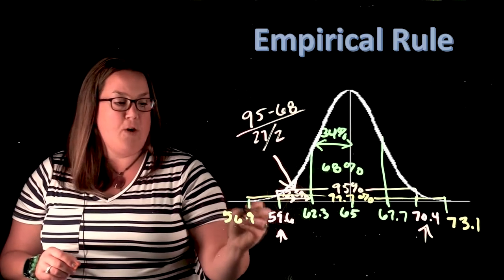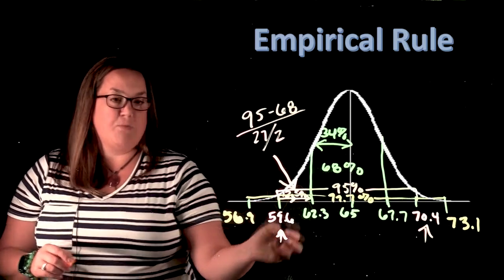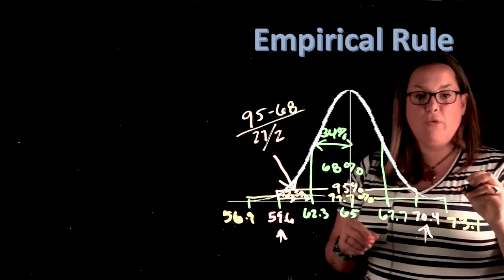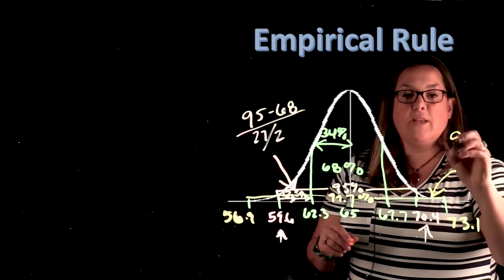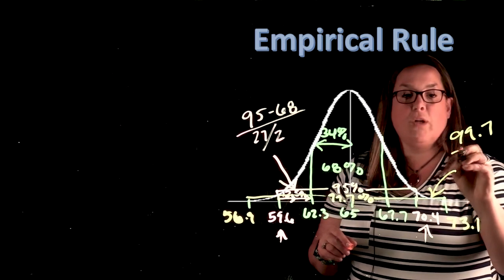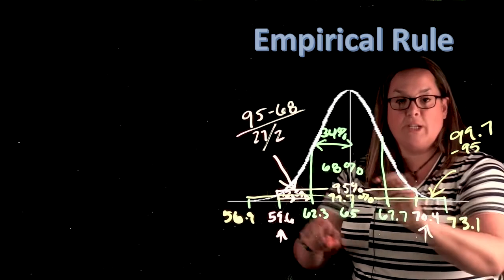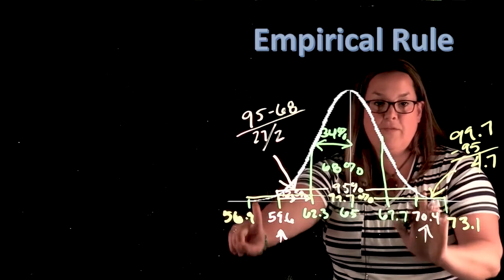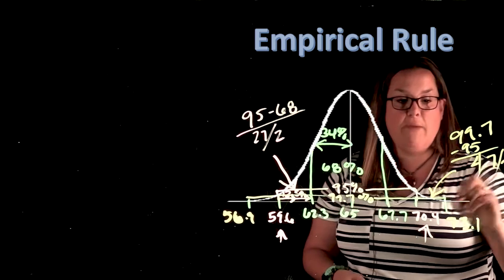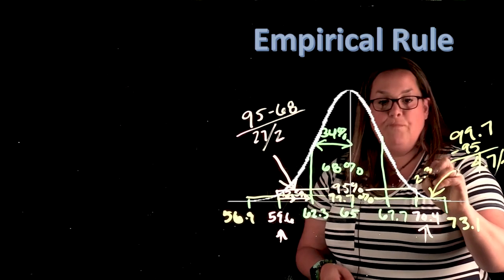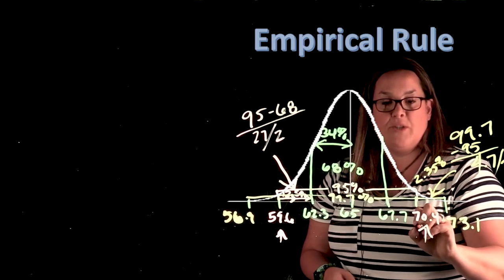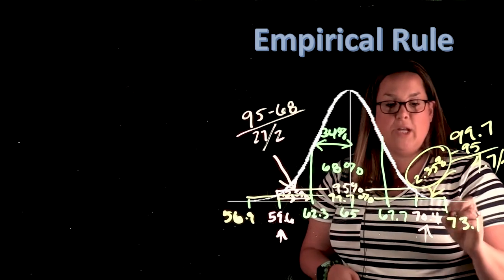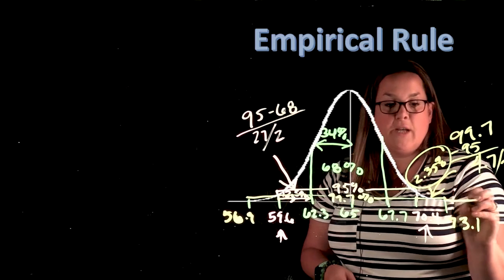If you wanted to figure out the percent that was between 56.9 and 59.6, or between 70.4 and 73.1, we would just take that 99.7%, subtract the 95% which is in the center, and we'd end with 4.7%. But that's both of these chunks, so if we divide that by two, we know that the particular chunk between 70.4 and 73.1 is 2.35%.